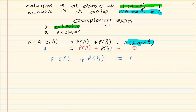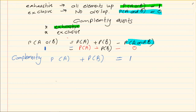This is the formula for complementary events. For an event to be complementary it needs to have two rules: you need to prove that it is exhaustive and you need to prove that it is exclusive. To prove exclusive, show that P of A and B equals 0. To prove exhaustive, show that P of A or B equals 1.